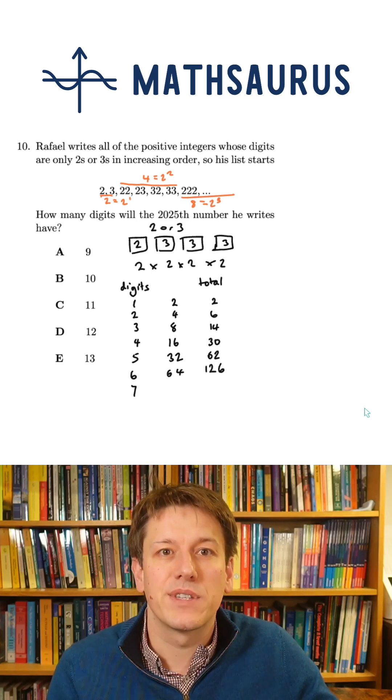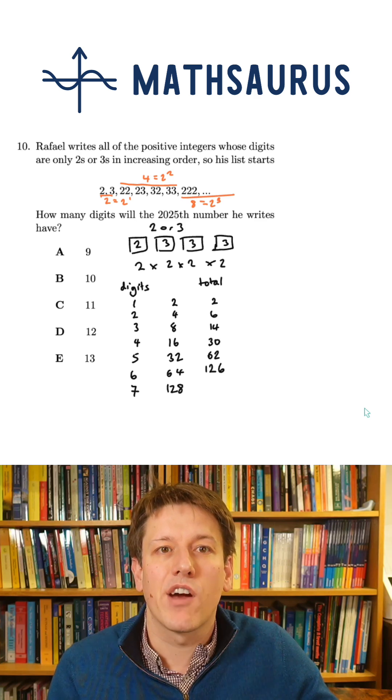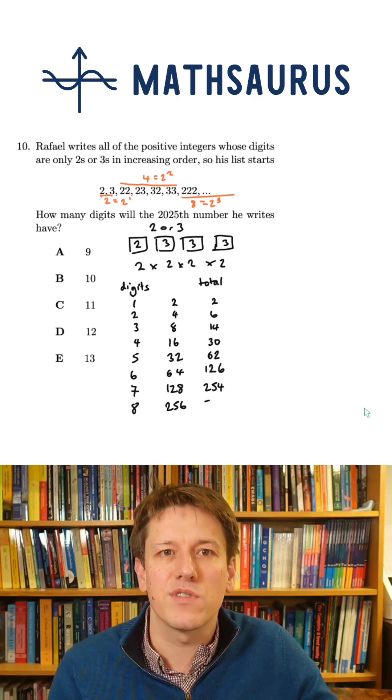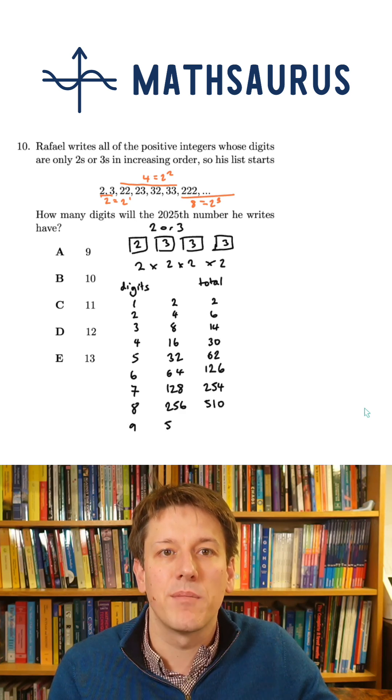There will be 64 six-digit numbers. That will take us to the 126th number. There are 128 seven-digit numbers that take us to the 254th number. There are 256 eight-digit numbers to take us to the 510th number.